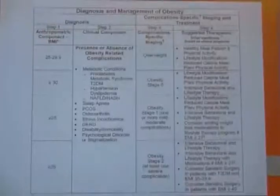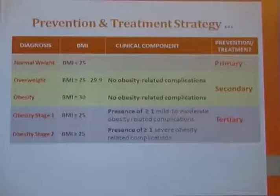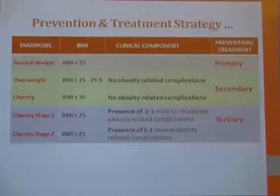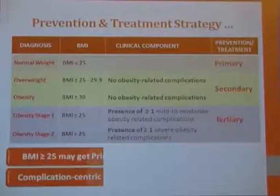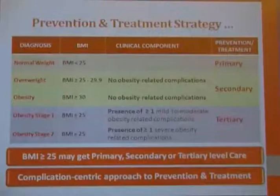The flowchart of intervention options for diagnosis and management shows that primary, secondary, and tertiary care levels have been planned. Secondary-level care is suggested for the overweight and obesity group, and tertiary-level care for obesity stage one and two, those who have developed complications. Patients with BMI above 25 may receive primary, secondary, or tertiary-level care.